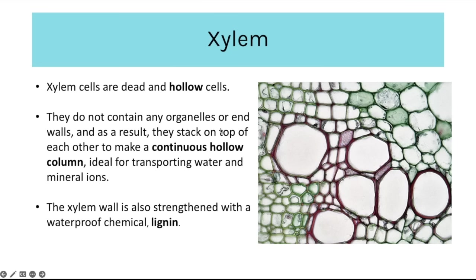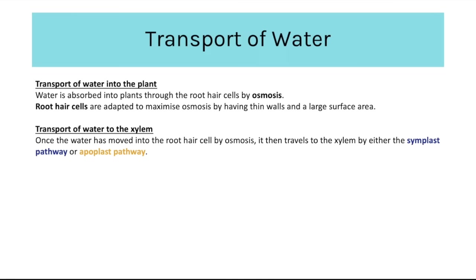Xylem cells are dead and hollow. They contain no organelles or end walls and stack up to create a continuous hollow column ideal for transporting water and mineral ions. The xylem wall is also strengthened with a waterproof chemical called lignin. Water transport into the plant happens from the soil into root hair cells by osmosis. Root hair cells are adapted to maximise absorption by having very thin walls to reduce the diffusion pathway and long protrusions providing a large surface area.